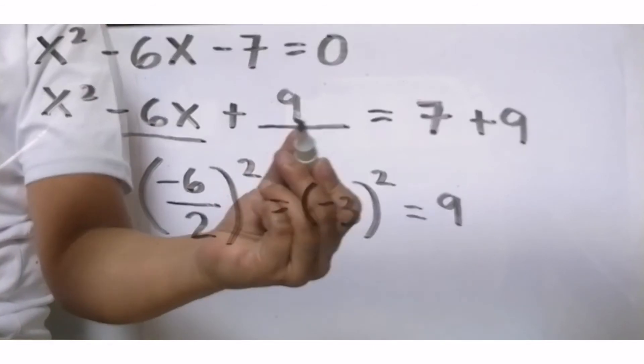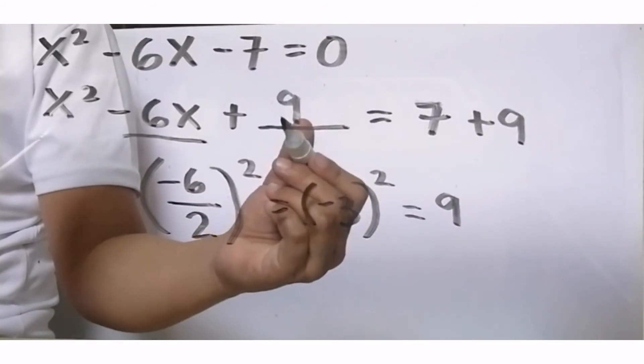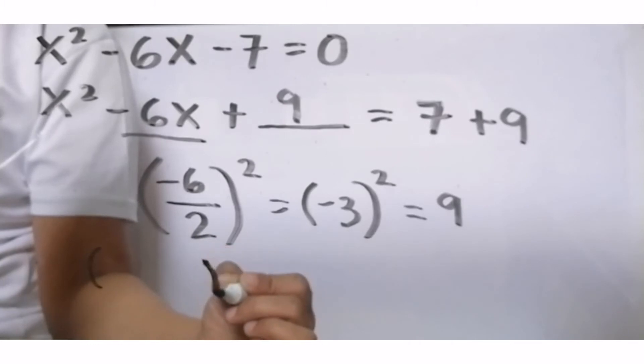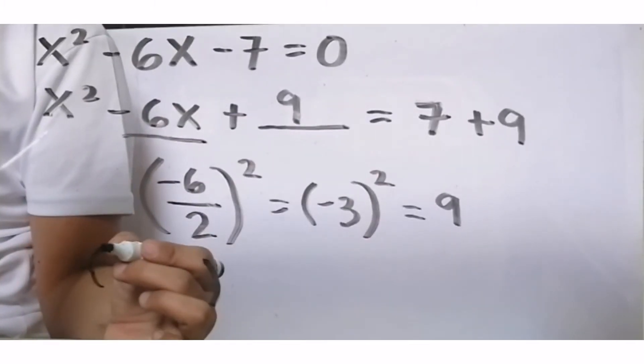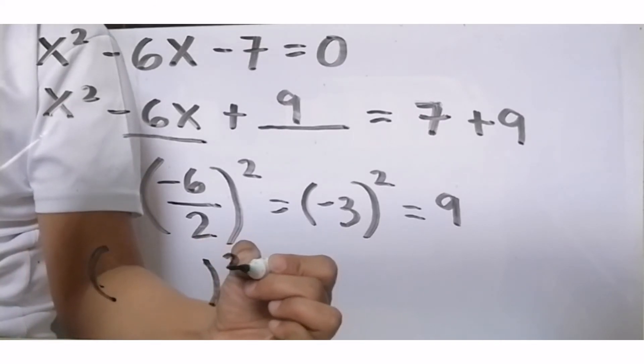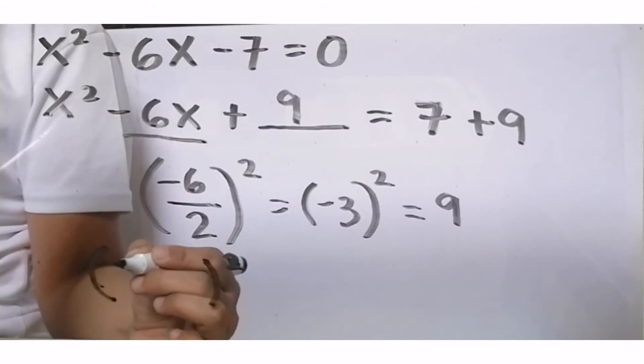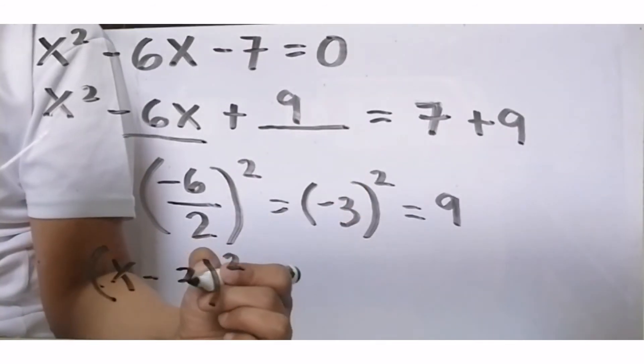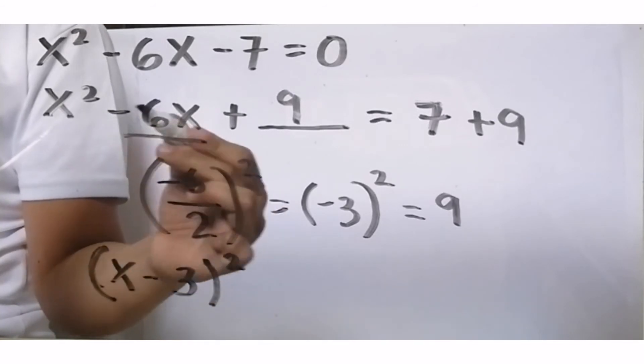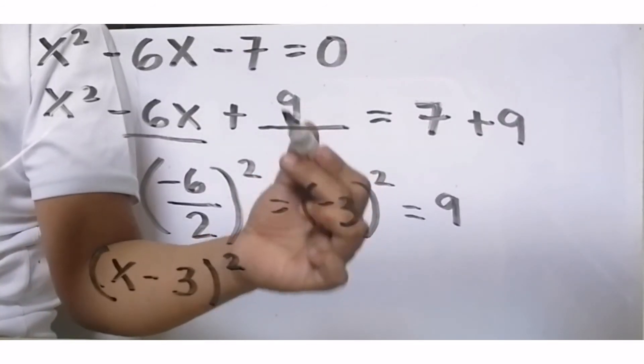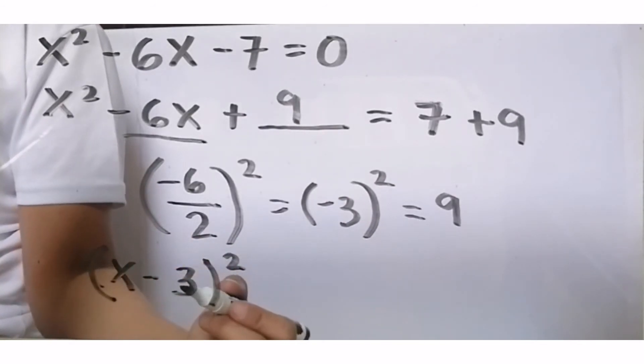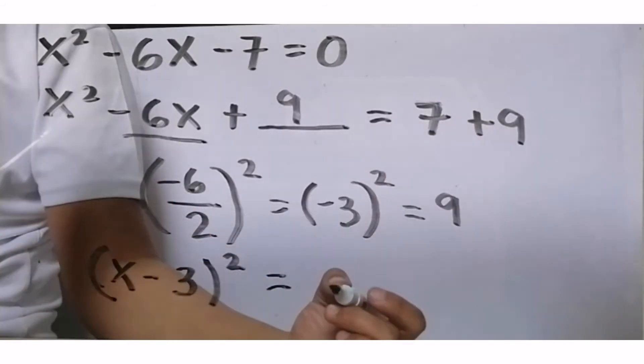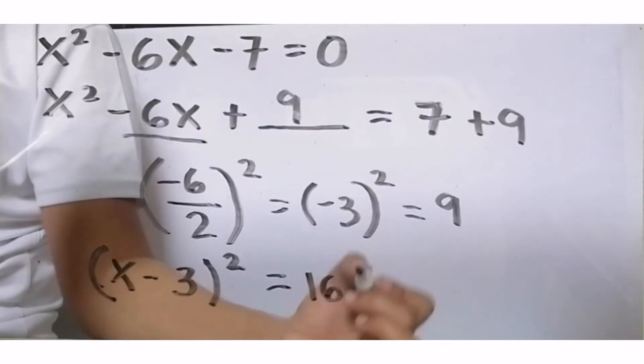This time, our square is complete. When we have a complete square of binomial, it's a perfect square, meaning we can get its factor. It's a perfect square trinomial. Put the square outside. What's the square root of x squared? That's x. What's the sign in the middle? Minus. What's the square root of 9? 3. This means x squared minus 6x plus 9, when we take its binomial factor, gives us two x minus 3 multiplied. This equals, what is 7 plus 9? This is positive 16.